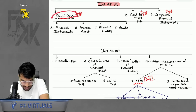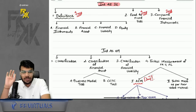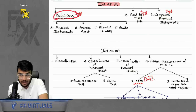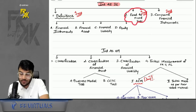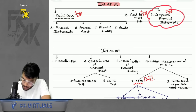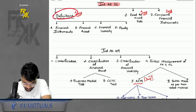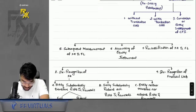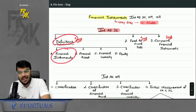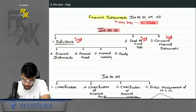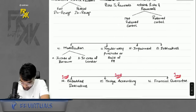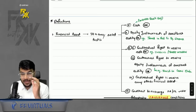Under IND AS 32, we focus on three aspects: the definition point, the fixed-to-fixed test, and the compound financial instrument. Let's start with definitions. Before studying financial instruments, you should know what is a financial asset, financial liability, and equity.